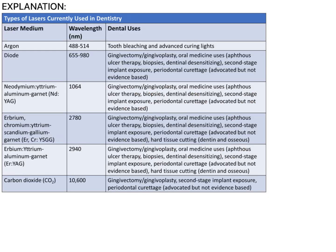Here is a table showing the wavelength of different lasers along with their dental applications — it's very important to know these. Argon lasers are available at 488 nm and 514 nm. The 488 nm wavelength is effective for high intensity curing, and argon lasers are also used for laser tooth whitening and bleaching.